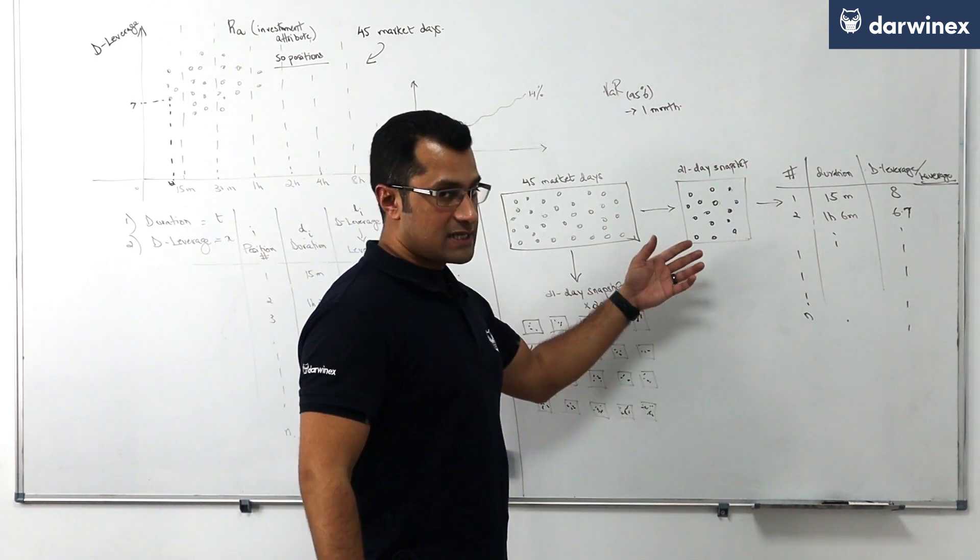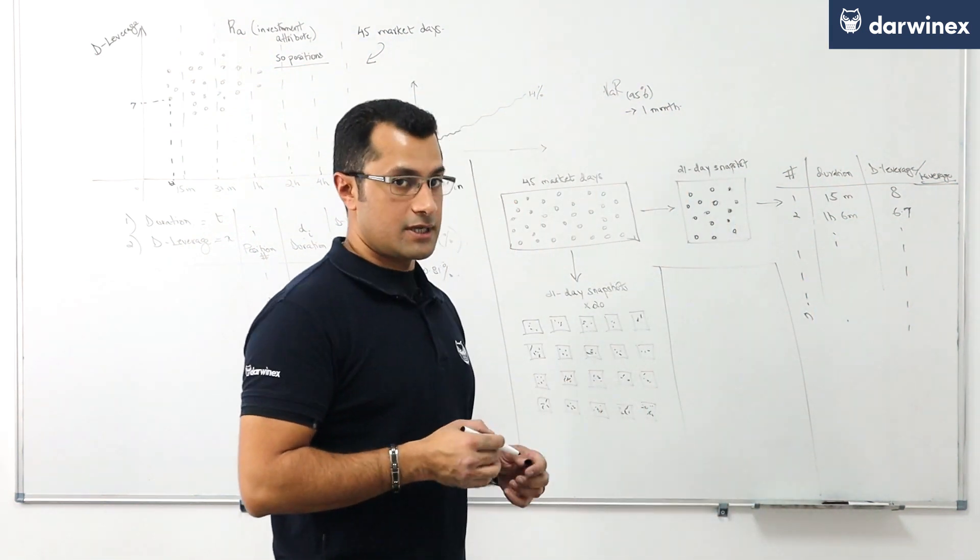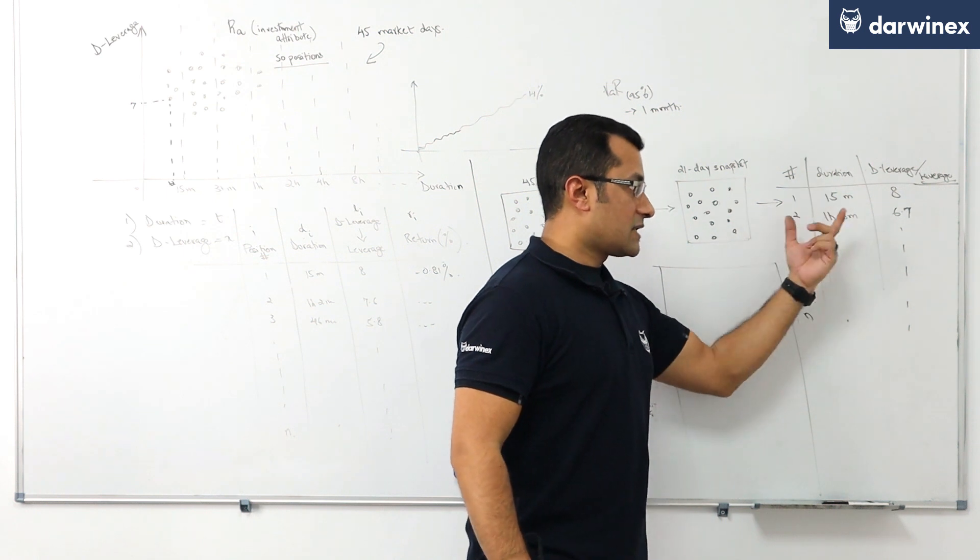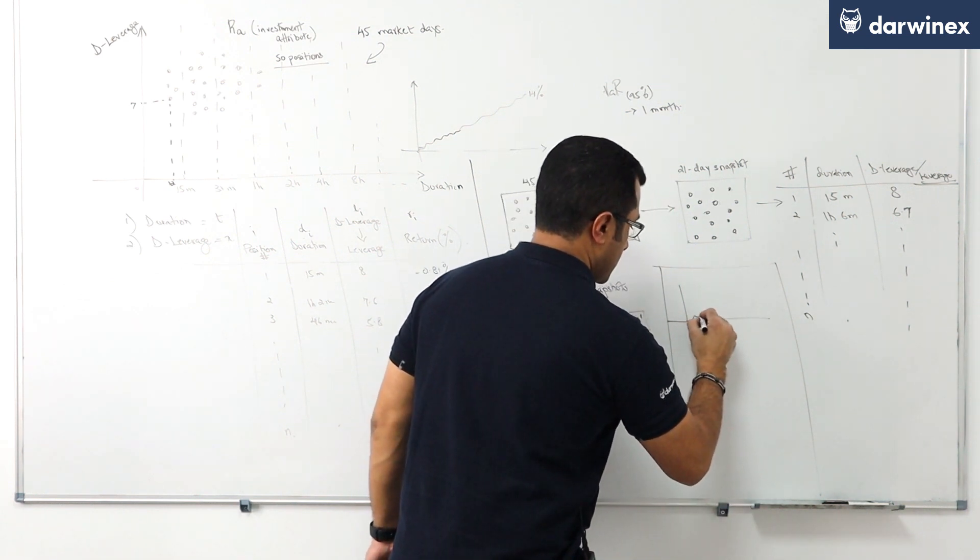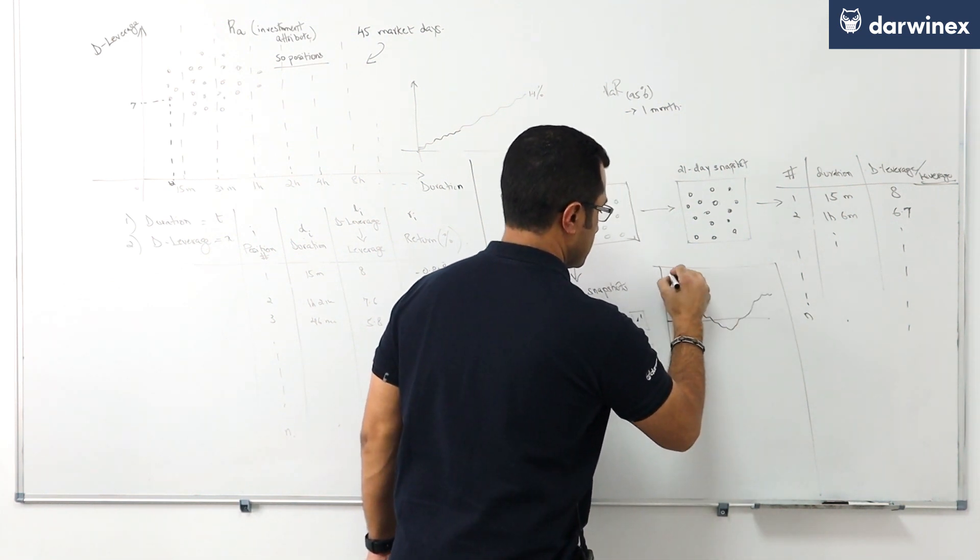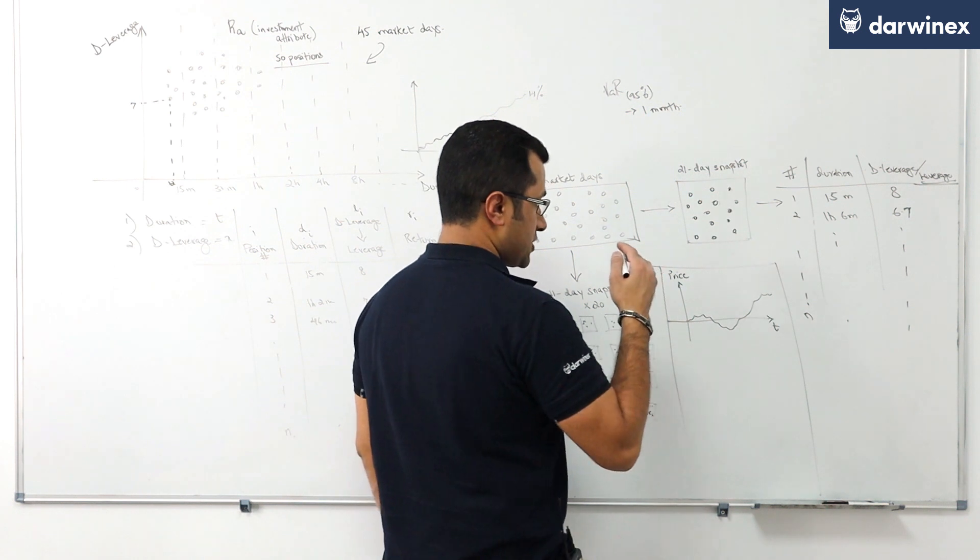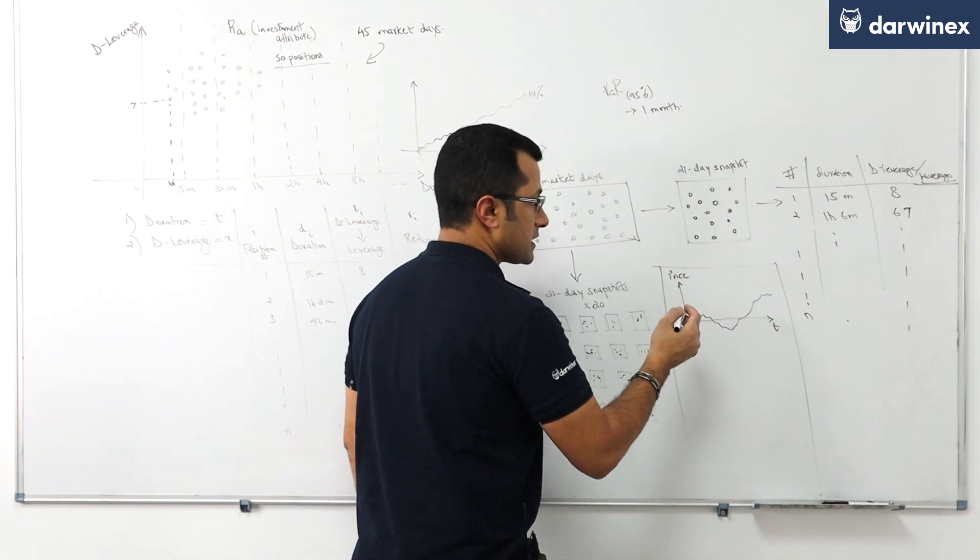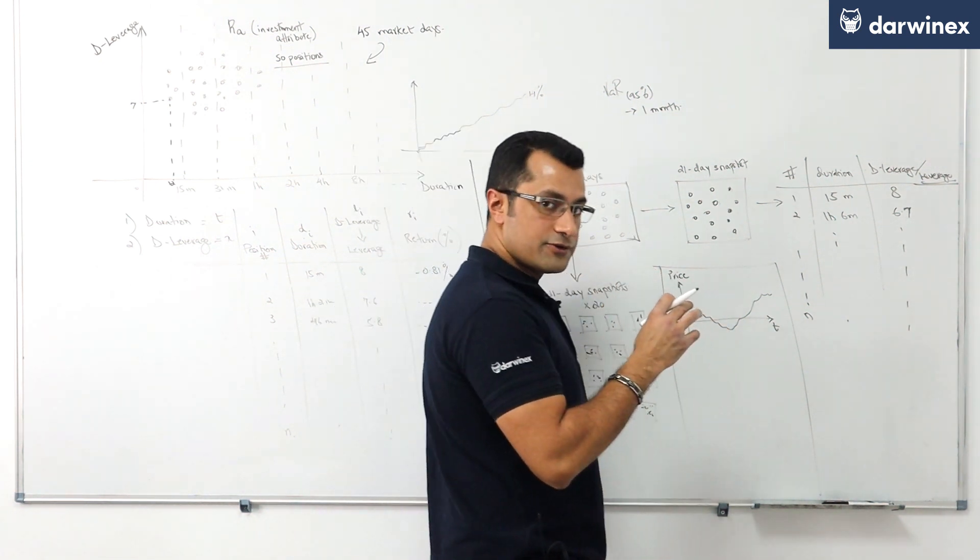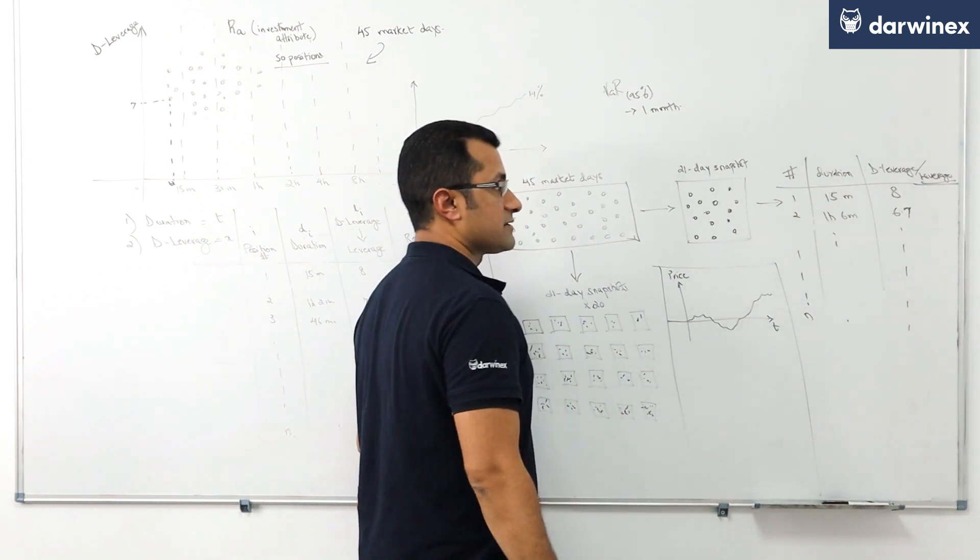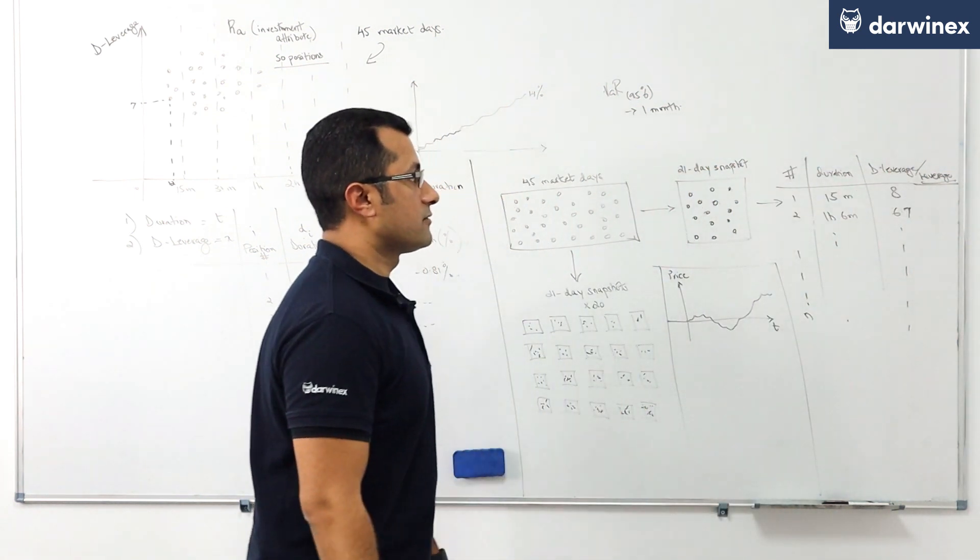For each of these 21-day snapshots, we're then going to simulate 500 random return series using the duration and leverage as specified in the position. Imagine we have the price behavior of the Euro Dollar looking something like this over the last one year. To conduct a simulation, we're going to essentially target a completely random entry and a completely random exit such that the duration of the trade is equal to the duration as specified in the position, and the leverage taken on the trade is extracted from d leverage.